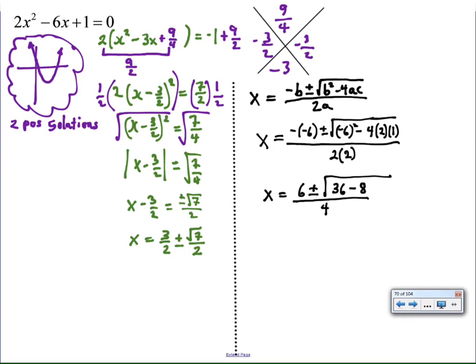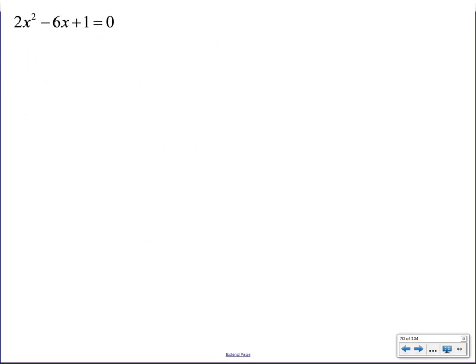The opposite of negative 6 is 6. Negative 6 squared is 36, and 4 times 2 times 1 is 8. 2 times 2 is 4. 36 minus 8 is 28, and divide that by 4. But my problem is now I see this, and I compare it to this, and they really don't look a lot alike. I can see that 6 over 4 could reduce to 3 halves, but I'm having a little trouble with this square root of 28 and this square root of 7 over here. So let's explore this a little further.